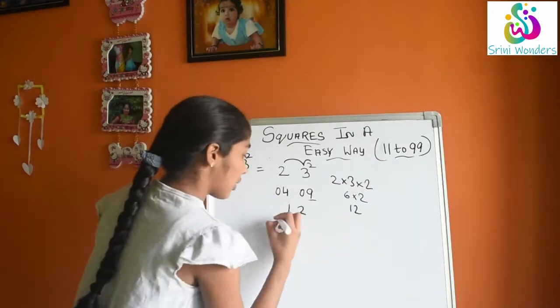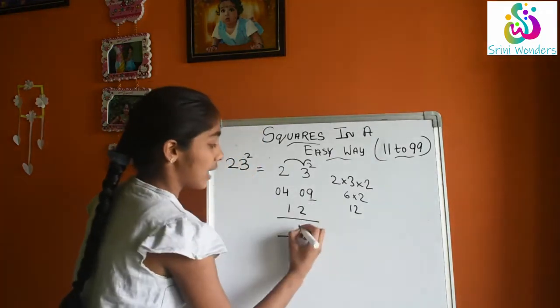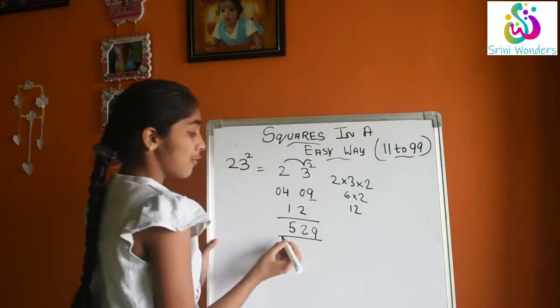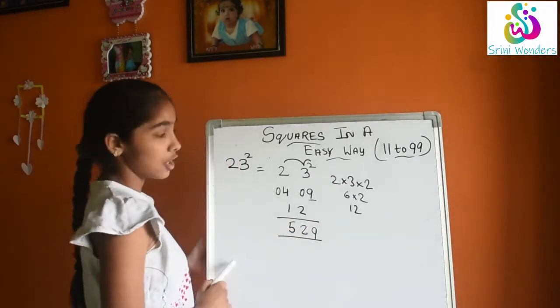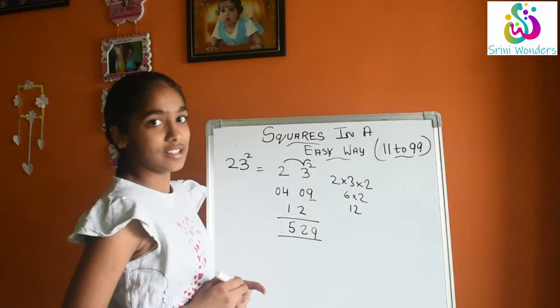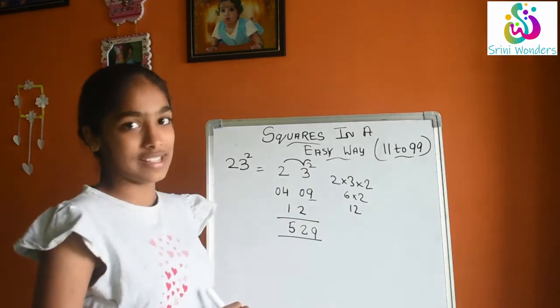Now what we will get as the answer? 9, 2, 5. 529 we will get. So 23 square is 529. See? We have got it in a very easy way.